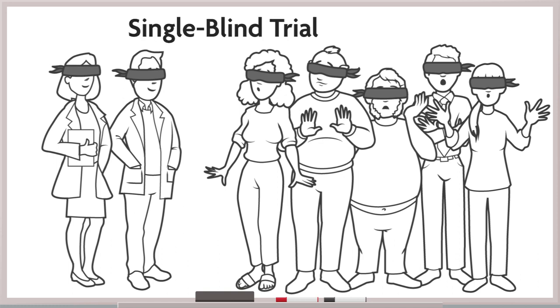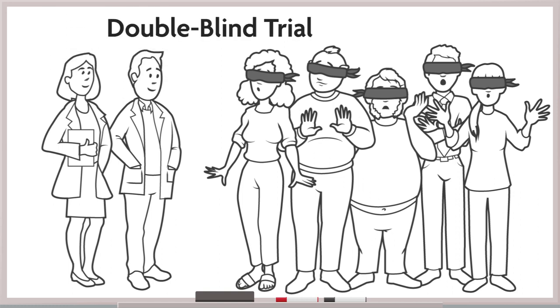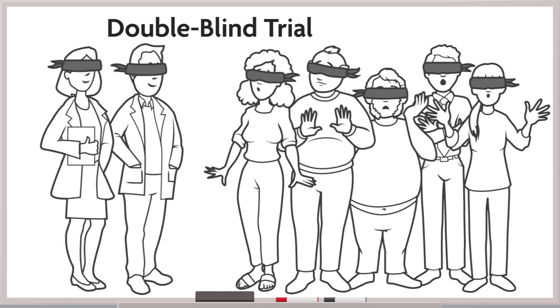A single-blind trial is one where the knowledge of treatment assignment is withheld from only one group. In a double-blind trial, treatment assignment is concealed from both the participants and the investigators.